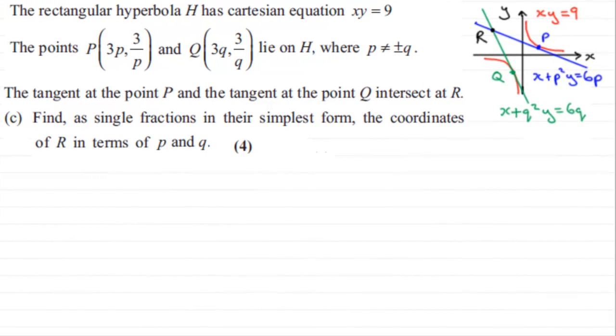Now this next part of the question, we've got this rectangular hyperbola H with equation xy equals 9. I've drawn a sketch graph here to illustrate what's going on. We've got the points P and Q that lie on the curve H. In the previous part we worked out the equations of the tangents at P and Q. We found that at P it was x plus p squared y equals 6p, and at Q it was x plus q squared y equals 6q. Now we're told that the tangent at point P and the tangent at point Q intersect at this point R, and we've got to find as single fractions in their simplest form the coordinates of R in terms of p and q.